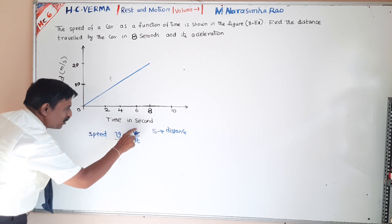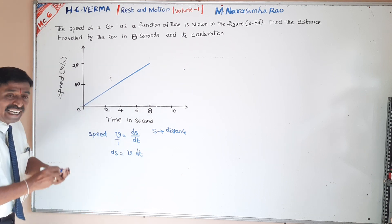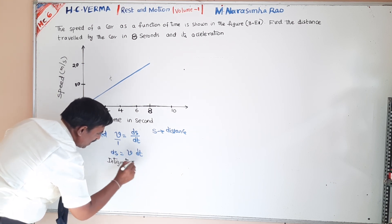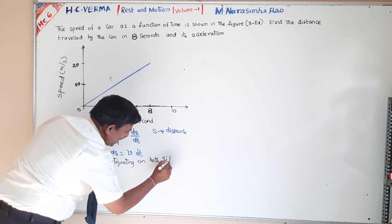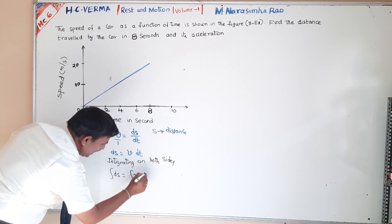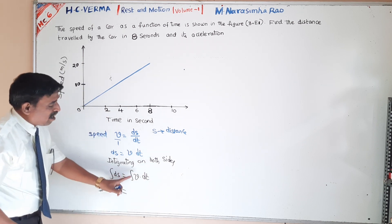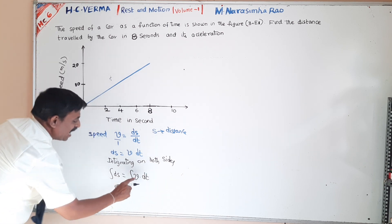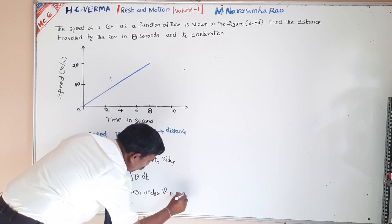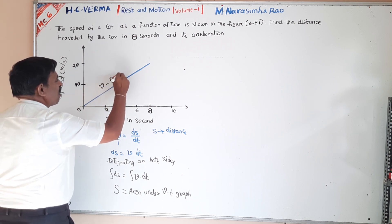Now, writing: 1 into dS equals V into dt. Integrating on both sides: integral of dS is equals to integral of V dt. Integral of dS means S is equals to integral of V dt, which is nothing but the area under the VT graph. So distance travelled is equals to area under the VT graph.